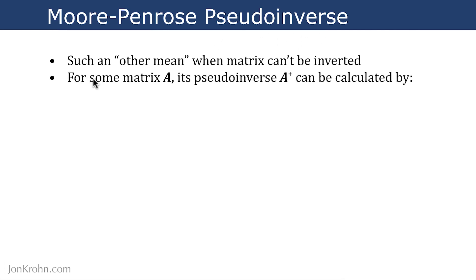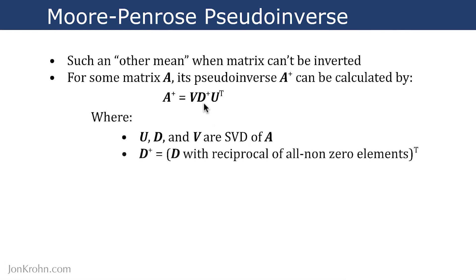For some matrix A, its pseudo-inverse is denoted as A superscript plus, and it can be calculated by this formula where U, D, and V are the singular value decomposition of A, which we discussed earlier in a video on singular value decomposition. D plus is a special version of D from the singular value decomposition wherein it has the reciprocal of all non-zero elements and then is transposed. Let's jump into a hands-on code demo now to calculate D plus as well as V and U transpose and show that this equation is true.